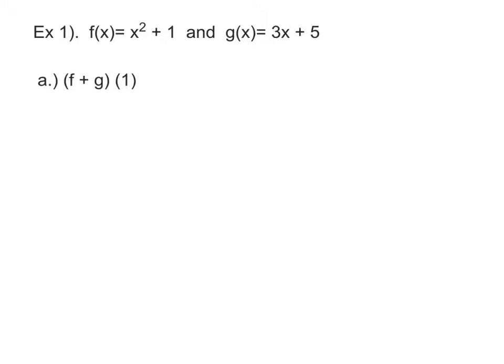Okay, so for our first example, you have these two functions. F of X is equal to X squared plus 1, and G of X is equal to 3X plus 5. So notice my notation here, this is F plus G of 1. So this 1 is the X value that you're plugging in. You're going to take your F of 1 plus your G of 1.